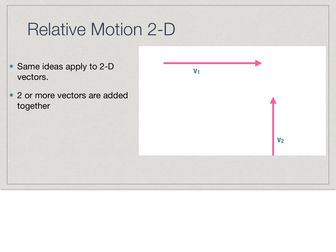The way we're going to analyze relative motion is with vectors. One-dimensional relative motion tends to be more reasoning-based, but two-dimensional cases require us to use vectors — multiple vectors added together to get some kind of resultant relative motion.